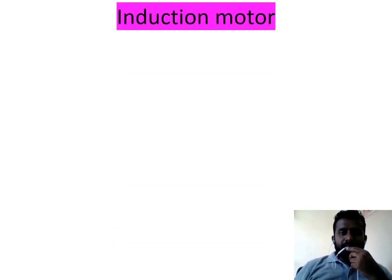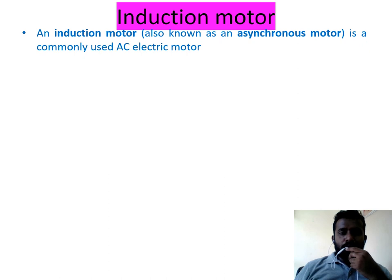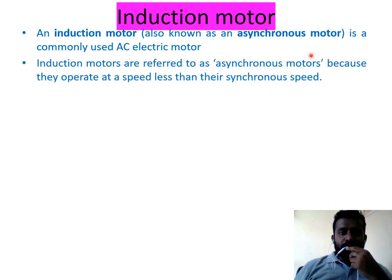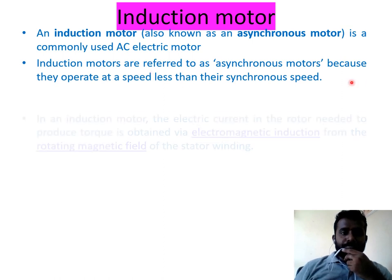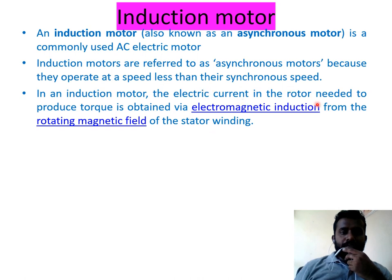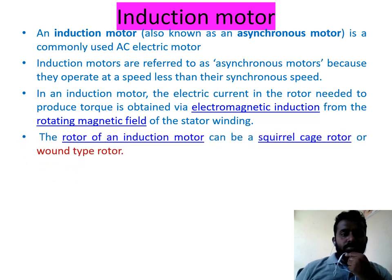As we have discussed, induction motor is also known as an asynchronous motor, which is a commonly used AC electric motor. Induction motors are referred to as asynchronous motors because they operate at speed less than synchronous speed. In an induction motor, the electrical current in the rotor needed to produce torque is obtained via electromagnetic induction from the rotating magnetic field of the stator winding. The rotor can be a squirrel cage rotor or slip ring or wound rotor type.